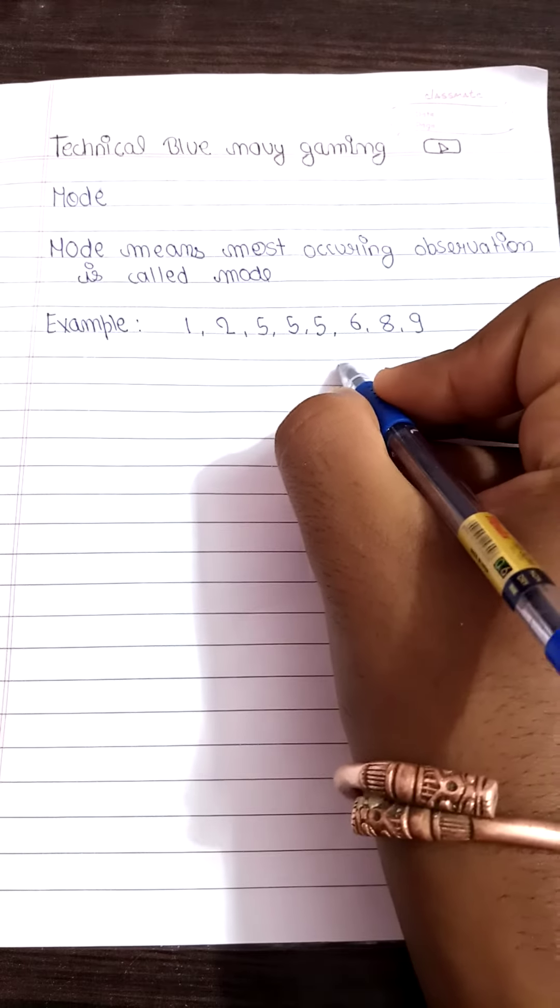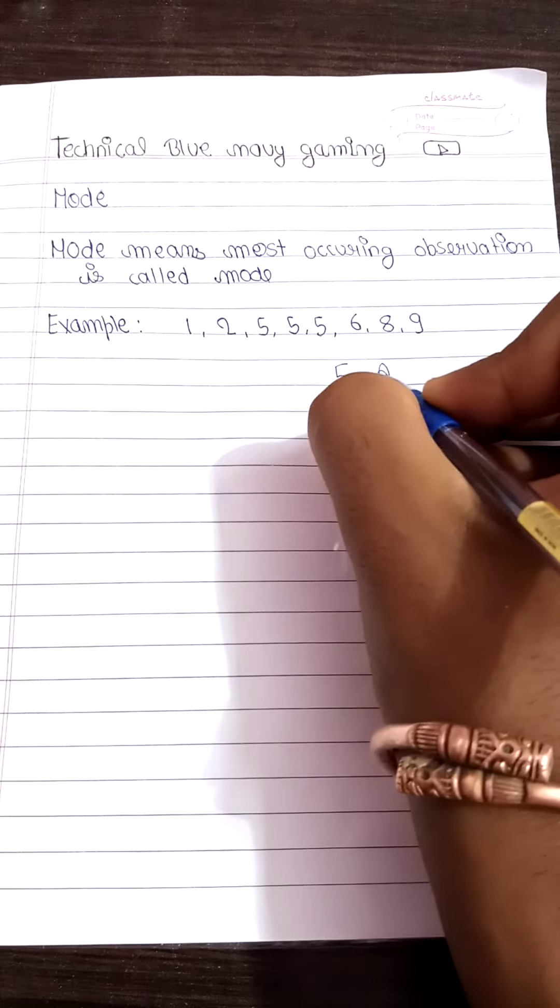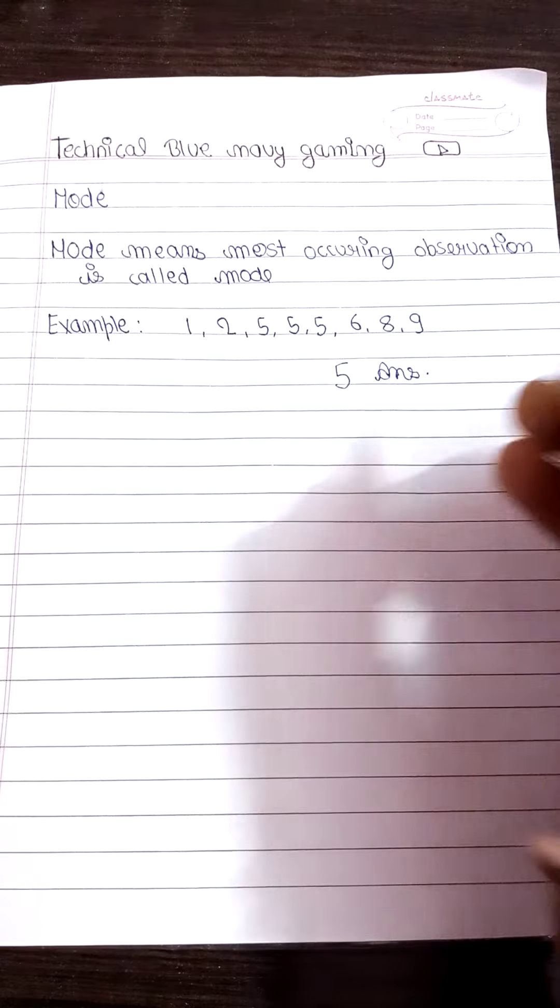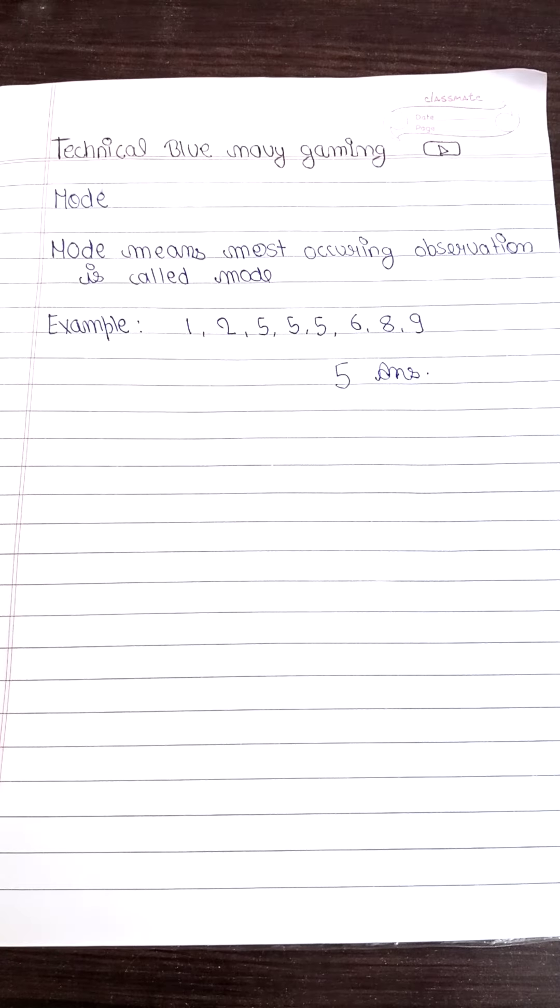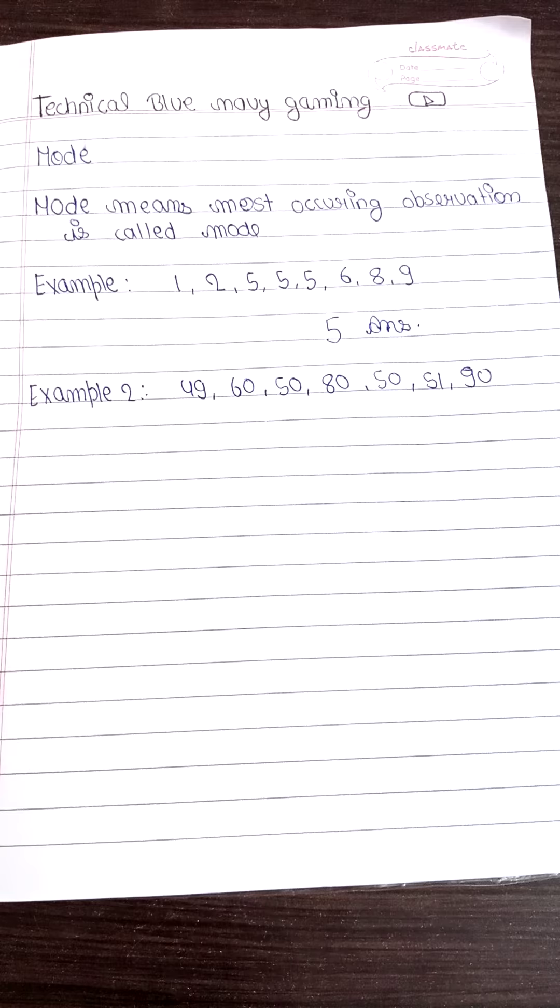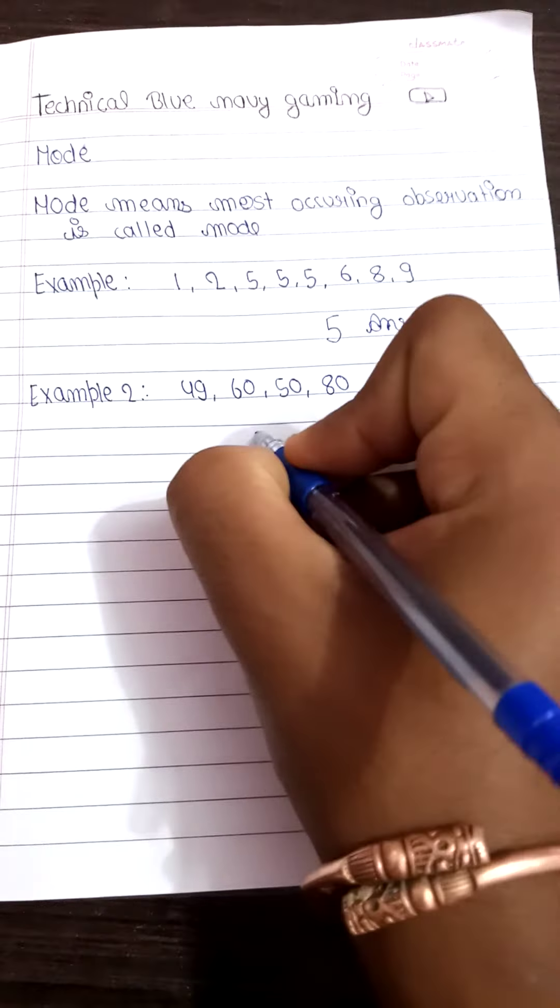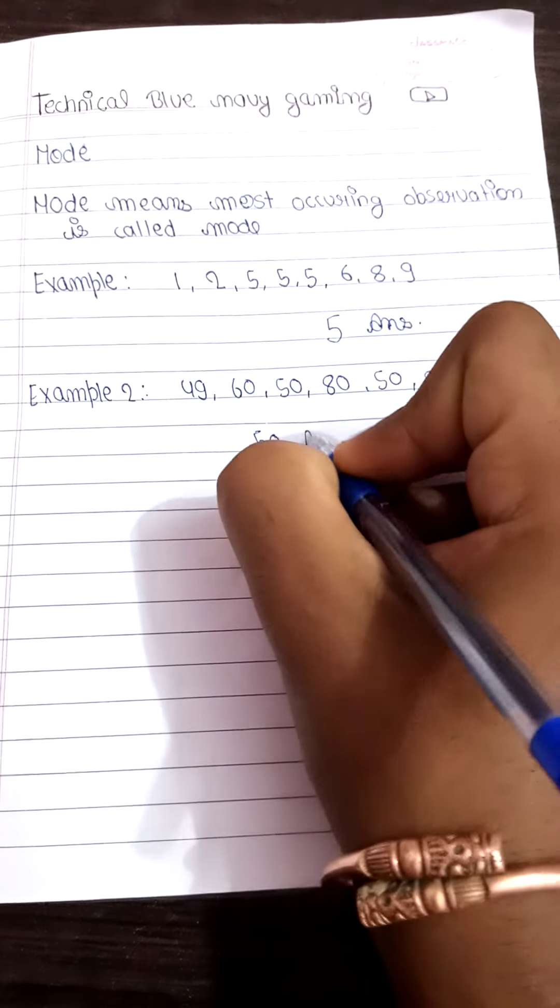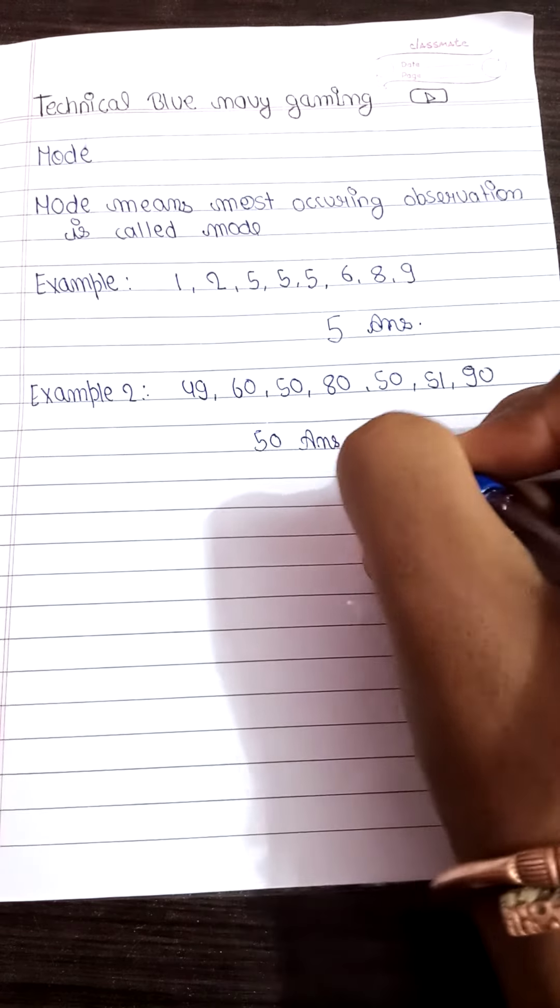So we also take the next example of mode. We take second example, the digits are 49, 60, 50, 80, 50, 51, or 90. In this you can also try to pause the video. In this the answer is 50 because 50 is the most occurring digit.